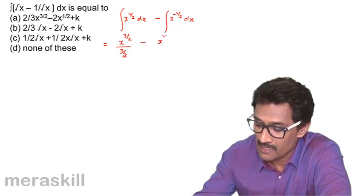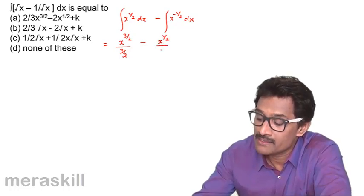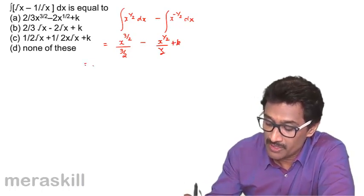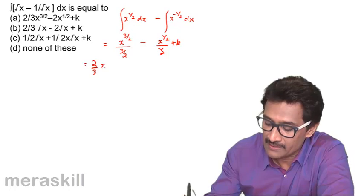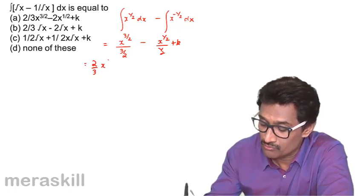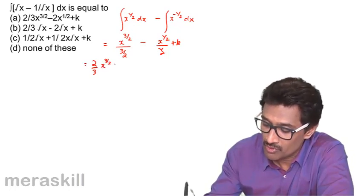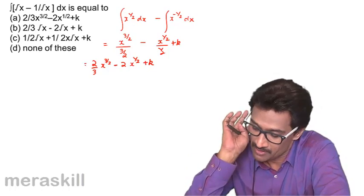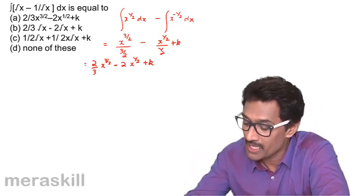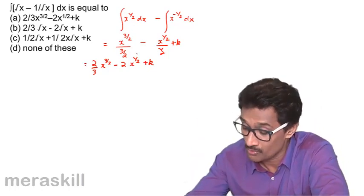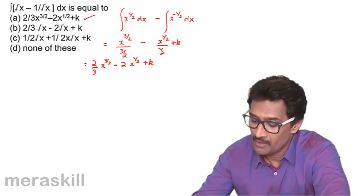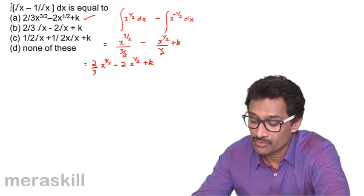For the integral of (√x - 1)/√x dx, we split into x^(1/2) and x^(-1/2) terms. The result is 2/3 x^(3/2) minus 2x^(1/2) plus a constant. Among the options, option A matches: 2/3 x^(3/2) minus 2x^(1/2) plus k.